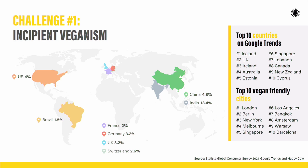We will be talking about three challenges that animals and the animal movement face in the Global South currently. The first one is incipient veganism. In countries of North America, Western Europe, and even Europe in general, veganism is much more widespread.